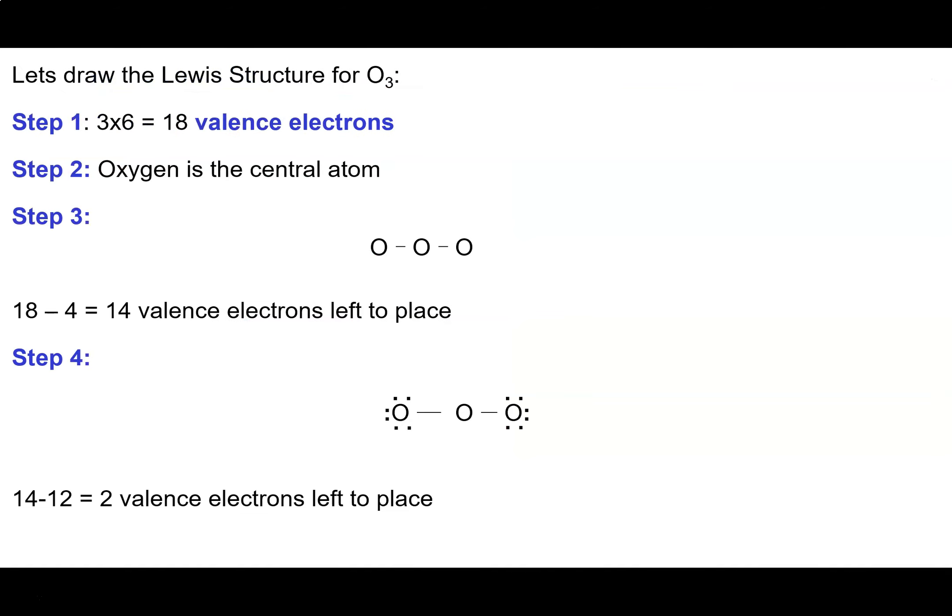We're going to draw the Lewis structure for ozone. Oxygen is in group 6A, so we have 3 times 6 because we've got 3 oxygen atoms here, 18 valence electrons to work with. Our choice of central atom is oxygen, oxygen, or oxygen, so it's pretty clearly going to be oxygen. The basic point where we begin is with 3 oxygen atoms connected in a line.